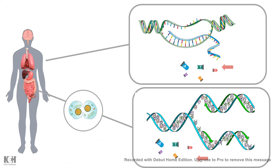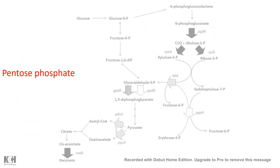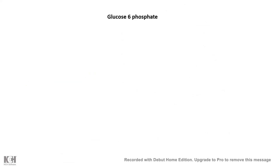A second important aspect of the pentose phosphate pathway is that it gives rise to nucleotides and helps in the nucleotide biosynthetic pathway. In our cells, for cell division, new DNA or new RNA need to be synthesized and nucleotides are required. The nucleotides have a sugar part, and that sugar part is provided by ribose-5-phosphate from the pentose phosphate pathway, making it important for nucleotide biosynthesis.